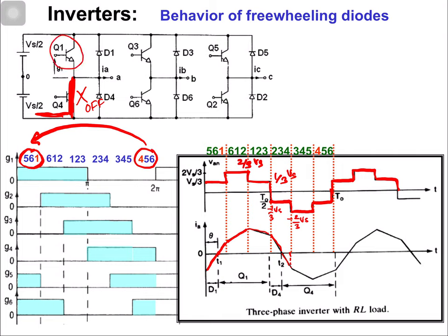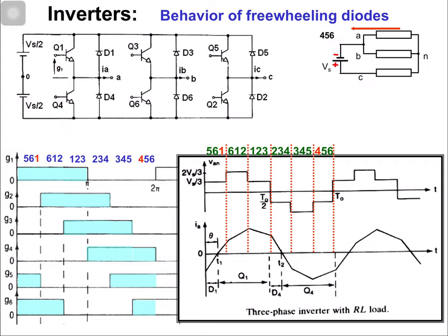Before the turn-on, current was flowing from phase A towards the negative terminal because phase A was connected with the negative terminal. Now because of the inductive load there is stored energy in the inductor. When you are going to turn on switch Q1, the stored energy in the inductor will not allow the current to become zero immediately.